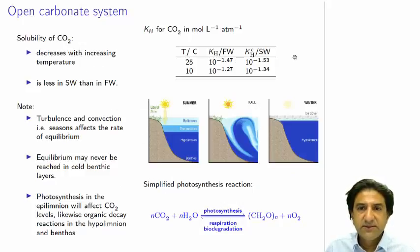Right, let's look at the carbonate, open carbonate system and look at KH values at different temperatures, because equilibrium constants and KH, the Henry's constant, is an equilibrium constant. So here's the temperature, 25 degrees and 10 degrees, and the constants in fresh water are 10 to the minus 1.47 at 25 and 10 to the minus 1.27 at 10. So what does that say?